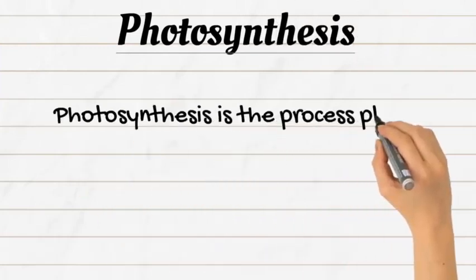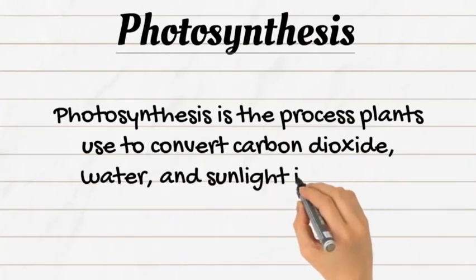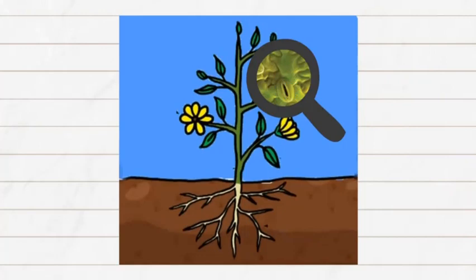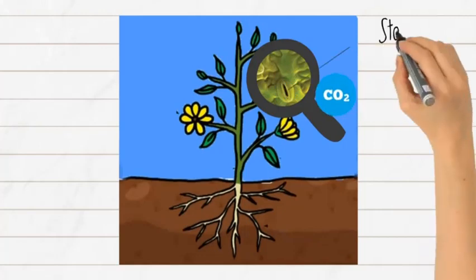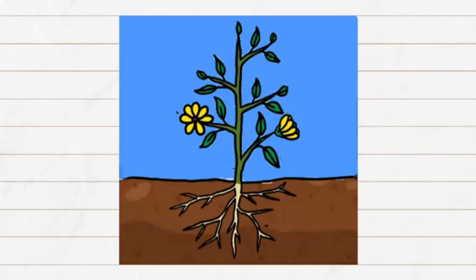The process of making food is called photosynthesis. Photosynthesis is the process plants use to convert carbon dioxide, water, and sunlight into food. Carbon dioxide is absorbed into the plant through small openings on the leaves called stomata. Chloroplasts in the plant leaves combine carbon dioxide, water, and sunlight and turn them into sugar and oxygen.